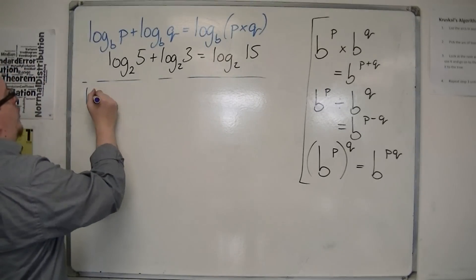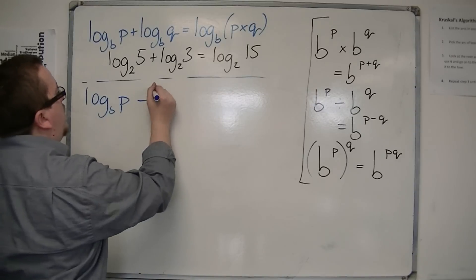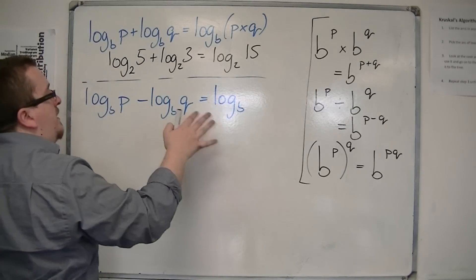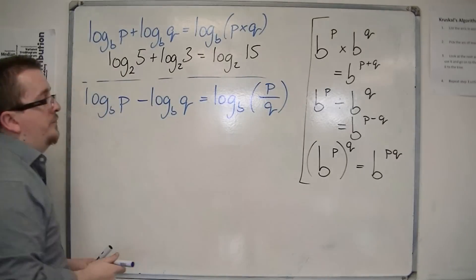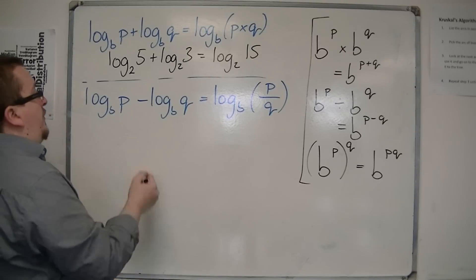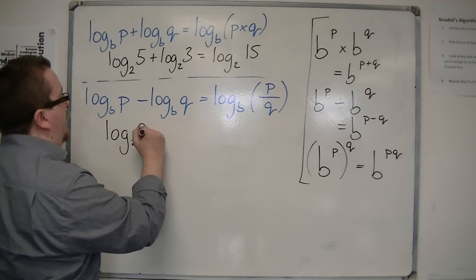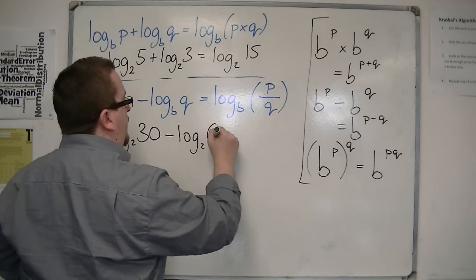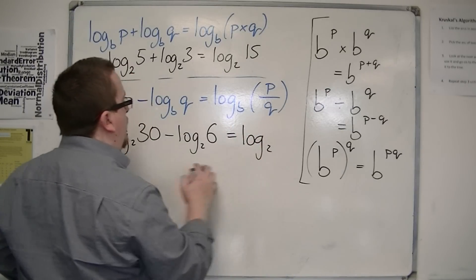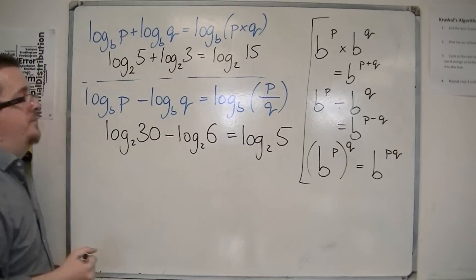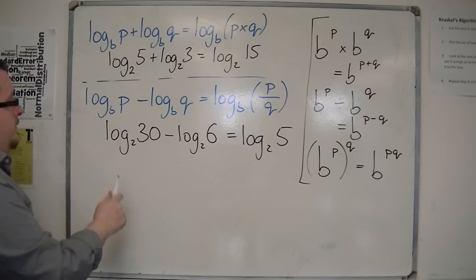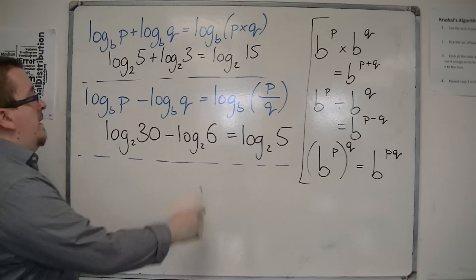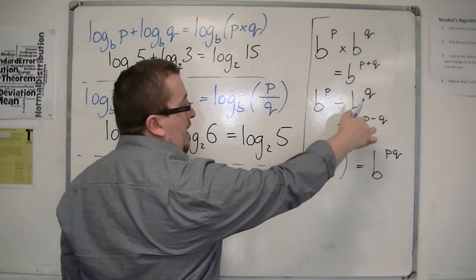In a similar way, log base b of p minus log base b of q equals log base b of p divided by q. For example, log base 2 of 30 minus log base 2 of 6 equals log base 2 of 30 divided by 6, which is log base 2 of 5. You can see this has a direct relation to the second index law: subtraction here becomes division, and division there becomes subtraction.